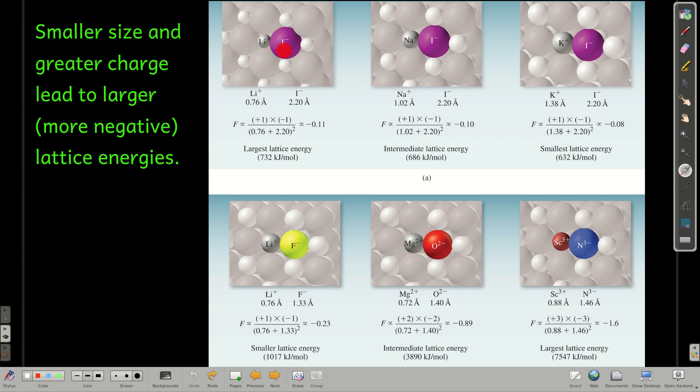Lithium iodide has the shortest distance between the two atoms. The same charges in all of these, so it has the lowest lattice energy. Now here, what's changing is the charges. Lithium is plus 1, fluoride is minus 1. Magnesium is plus 2, oxide's negative 2. Scandium is plus 3, and nitride is negative 3. So the top is getting bigger. And the bigger it is, the more negative the force of attraction is. That means the more attractive the forces are, and the greater the lattice energy.